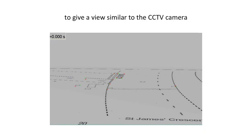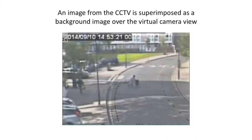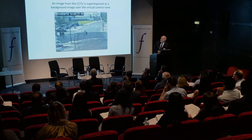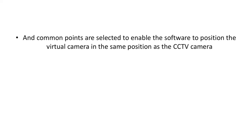This was the simulated view from the CCTV camera, effectively looking down and along St. James's Crescent. A still image taken from the CCTV is positioned such that the virtual camera view and the CCTV camera view give approximately the same view. Common points between the two — such as the centre of the junction — are then selected to enable the software to position the virtual camera in the same position as the CCTV camera.